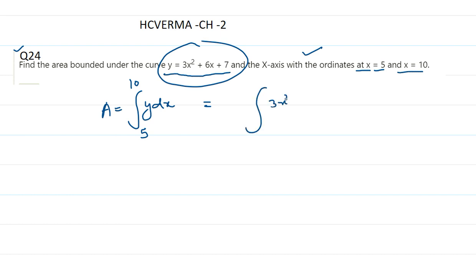So this is 3x squared plus 6x plus 7 and multiply with dx. And here limits are 5 to 10. So this is how we solve this. This will be integration 3x squared dx plus 6x dx plus 7 dx. And limits are 5 to 10.